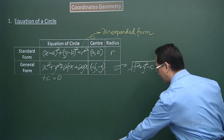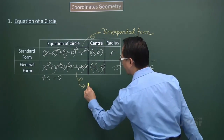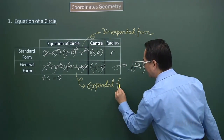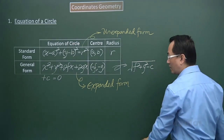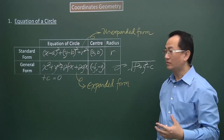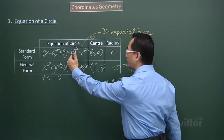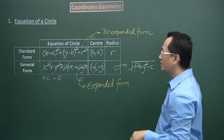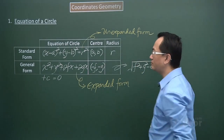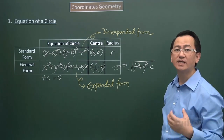We have the unexpanded form and also the expanded form. When you're asked to find the equation of a circle, which form would you put it in? It's acceptable to use the standard form, but most of the time we can expand it and present the final answer in general form. Or if a specific form is required, then we go according to the specified form.